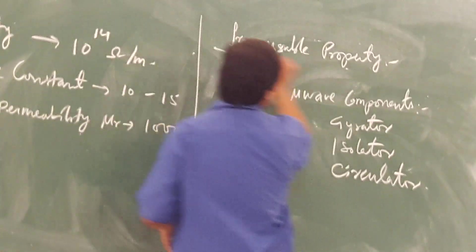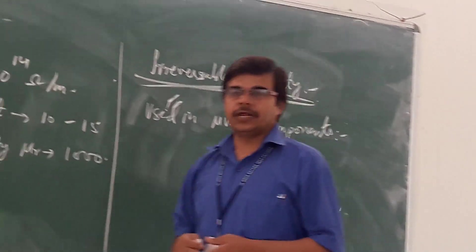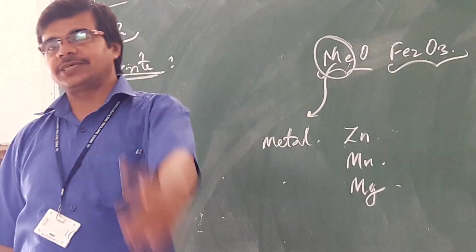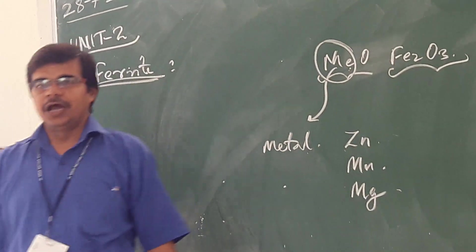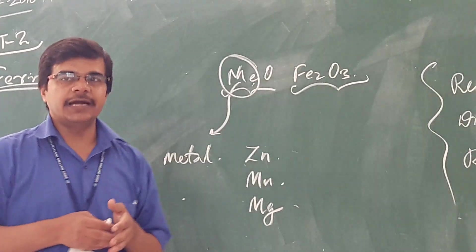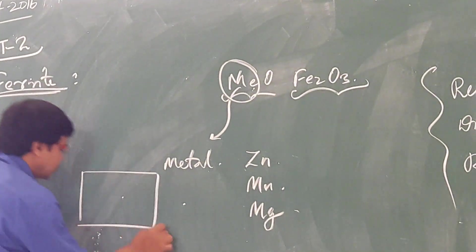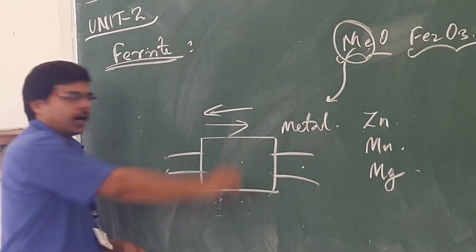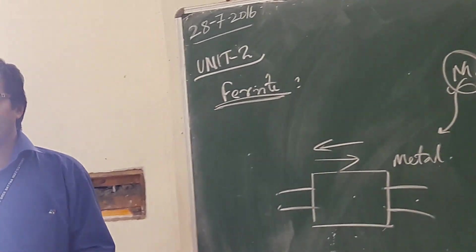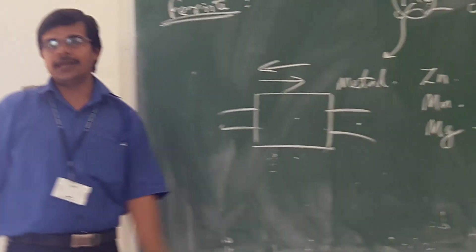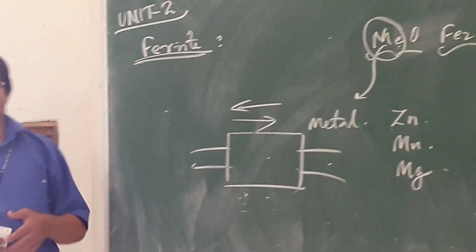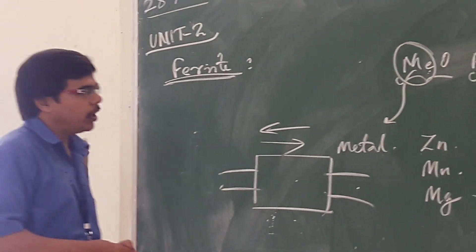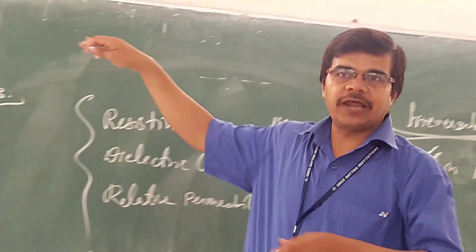Apart from that, ferrite has something called an irreversible property. This means whatever property you have in the forward direction will not be the same as in the reverse direction. Assuming you have two poles, the forward direction characteristics will not be the same as the reverse direction. This property is present because of the ferrite material in your microwave component.